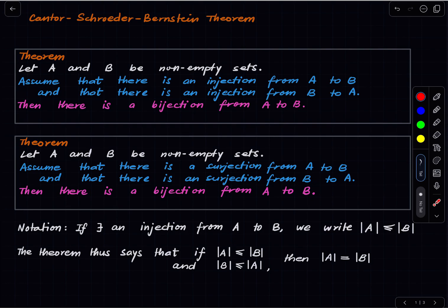So to show that two sets are in bijection, you need not work very hard. Just construct an injection from A to B, construct an injection from B to A, and that's it. There exists, therefore, a bijection between A and B. And that makes life a lot more easier than it would be otherwise.